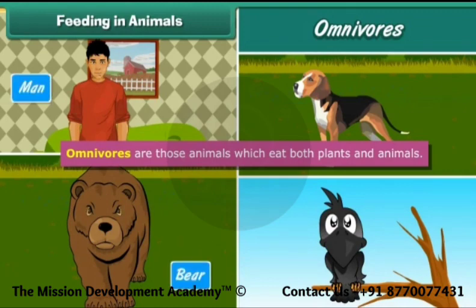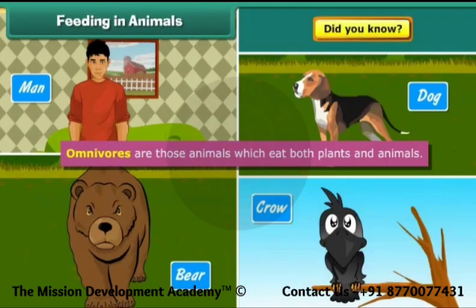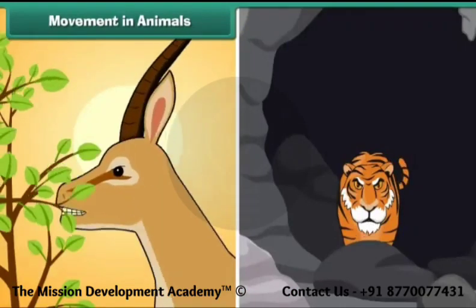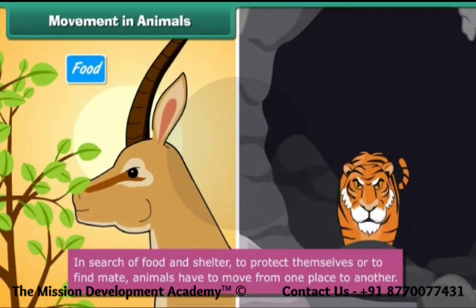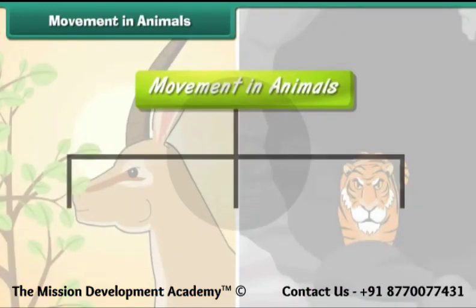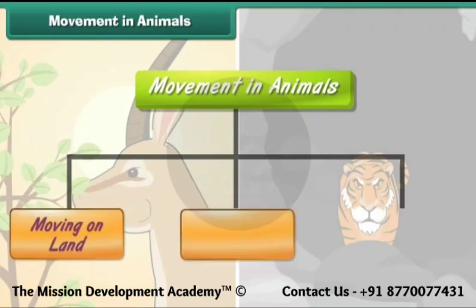Omnivorous animals eat both plants and other animals. Examples include man, bears, dog, and crow. Movement in animals: in search of food and shelter, to protect themselves, or to find a mate, animals have to move from one place to another. There are three different types of movement: moving on land, moving in water, and moving in air.